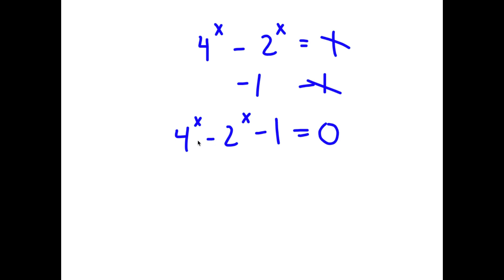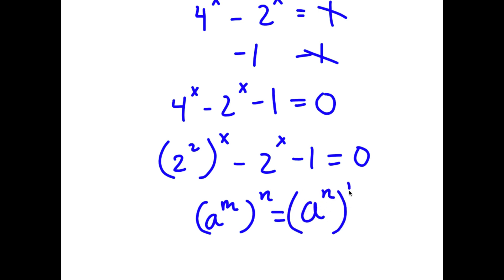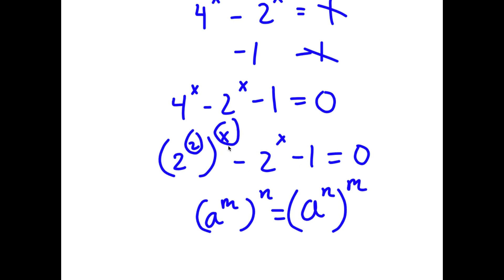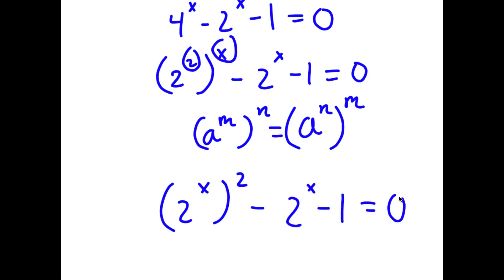Now I'm going to rewrite 4 to the power of x as 2 to the power of 2 to the power of x. If you have something in the form a to the power of m to the power of n, you can switch these two exponents. So now I have 2 to the power of x to the power of 2 minus 2 to the power of x minus 1 is equal to 0.